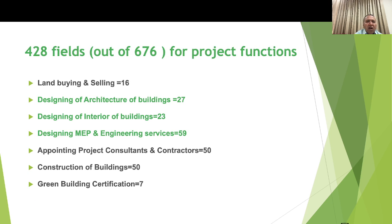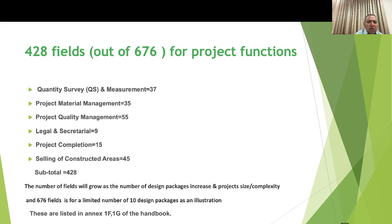Out of 670 fields, 428 fields are directly applicable for the project functions: land buying and selling — 16 fields; design and architecture — 27; design of interior design building — 23; MEP services — 59; appointing of project consultants and contractors — 50; construction of buildings — 50; green building certification — 7; QS function or measurement — 37; project materials — 35; project quality management — 55; legal and security data — 9; project completion — 15; selling of constructed property — 45. Subtotal: 428 fields across different master data tables.